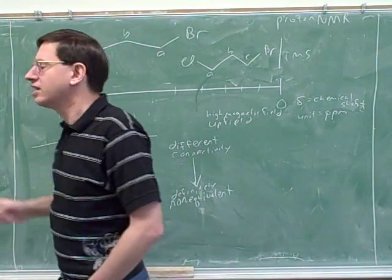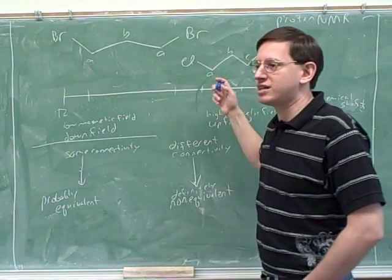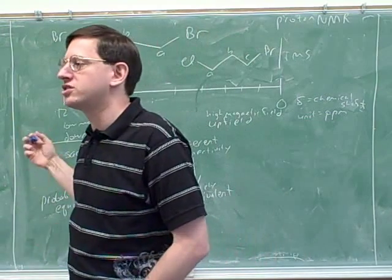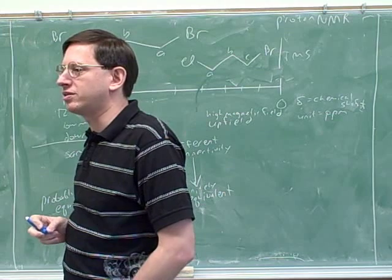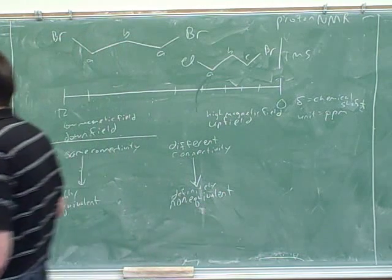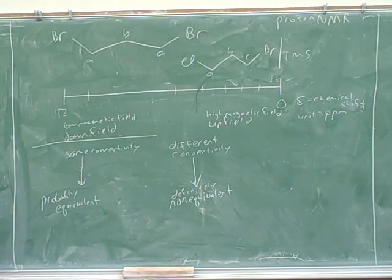Remember that the way you're really going to be using this is you're going to be staring at a printout of peaks and trying to figure out what the molecule was that generated it. Well, if you notice that there seem to be very few peaks, the molecule probably has a lot of symmetry. And that's why there's so few peaks. This is one of the types of clues that we use.